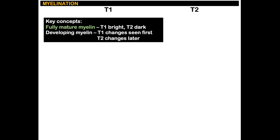Key concepts: fully mature myelin is T1 bright and T2 dark. During development, the T1 changes come first, and T2 comes later.